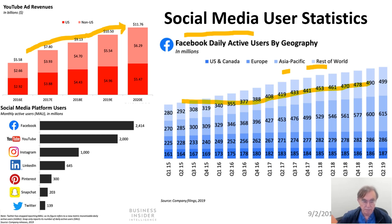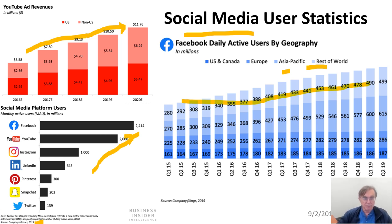Here we have another plot of monthly active users as a function of platform in 2019, showing LinkedIn, Pinterest, Snapchat, and Twitter. It is astonishing, given the notorious nature of Twitter, that it gets so few users. I don't use Facebook or Twitter — I find it very difficult to find any substance there. The comments are all hundreds of people saying 'plus one' or smiley faces to announcements about people eating pizza. But anyway, this just points out the continual thriving nature of social media.